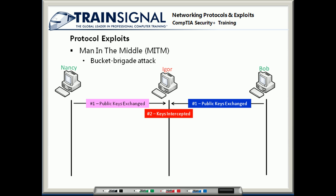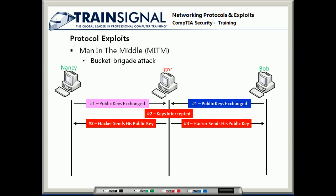To keep up the charade, he sends back his public key to those two, and each one thinks that Igor's public key is really the other person's public key. So Bob thinks he's going to be using Nancy's public key, and Nancy thinks she's going to be using Bob's public key, but in all reality, when they go to encrypt their data, they're going to be using Igor's public key to send messages back and forth.